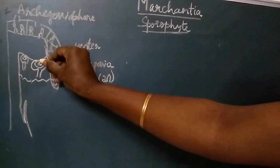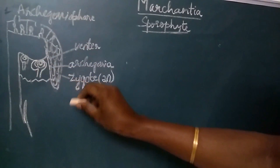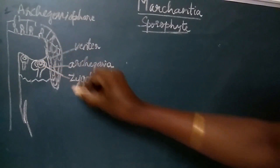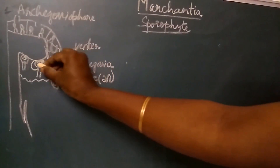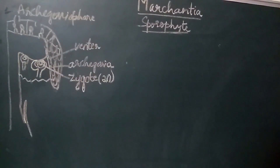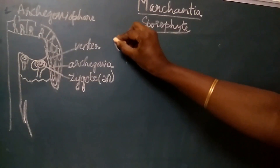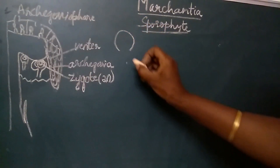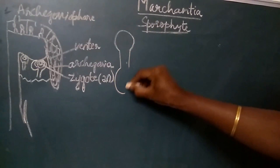The fertilized egg is called the zygote. The zygote is the starting stage for the sporophytic generation. It is diploid in nature. This single-celled zygote divides a number of times to develop the sporophyte, which has a bulbous foot, a seta, and a capsule.